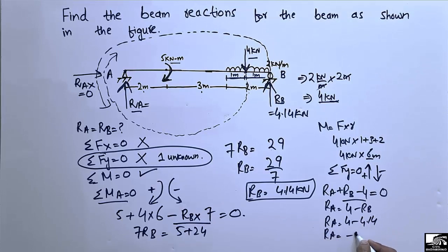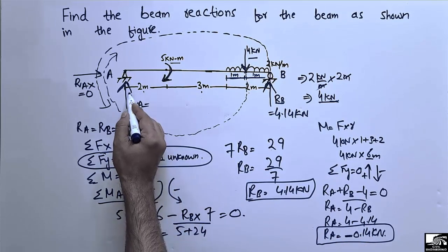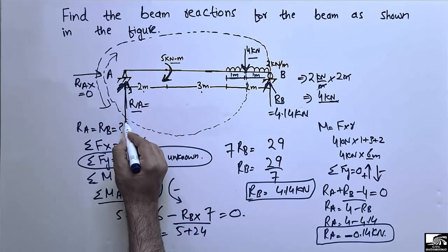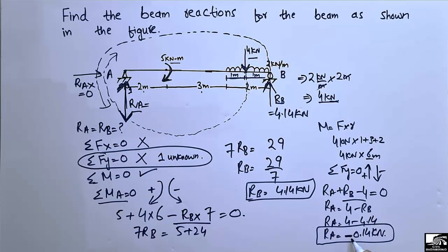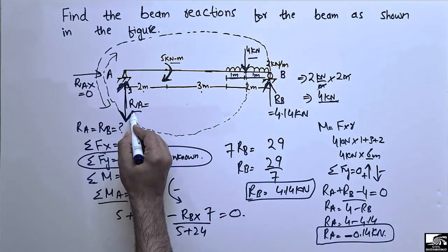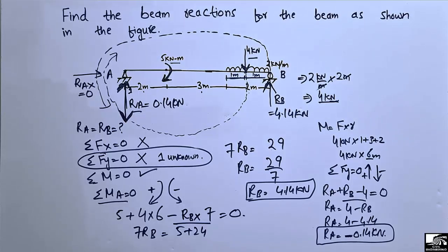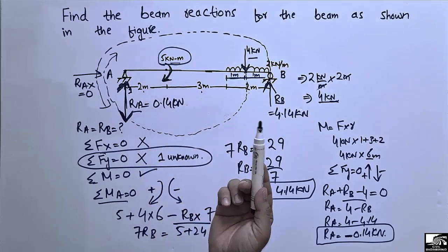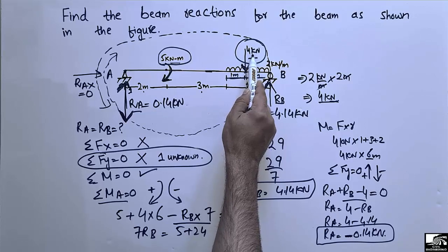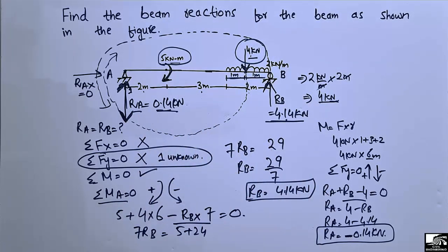RA = −0.14 kilonewtons. The negative sign means our assumed direction was wrong — RA does not act upward but downward. So RA acts downward with a magnitude of 0.14 kilonewtons. You can verify equilibrium: the 4 kN downward force plus 0.14 kN downward from RA are balanced by RB = 4.14 kN upward. The beam is in equilibrium. Hope you guys understand — don't forget to subscribe for more civil engineering videos!